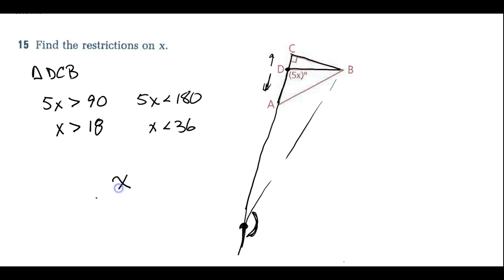So our restrictions on x is that it's got to be greater than 18, but it also has to be less than 36.